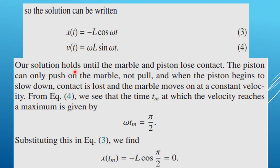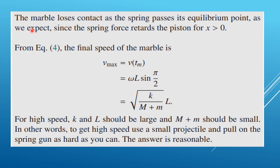With A = 0 and B = −L, the solution is x(t) = −L cos(ωt) and v(t) = ωL sin(ωt). This solution holds until the marble and piston lose contact. The piston can only push the marble but cannot pull it, so when the piston begins to slow down, contact is lost. From the velocity equation, the maximum velocity occurs when ωt_m = π/2. At this time, the position is x(t_m) = −L cos(π/2) = 0, which is the equilibrium position.